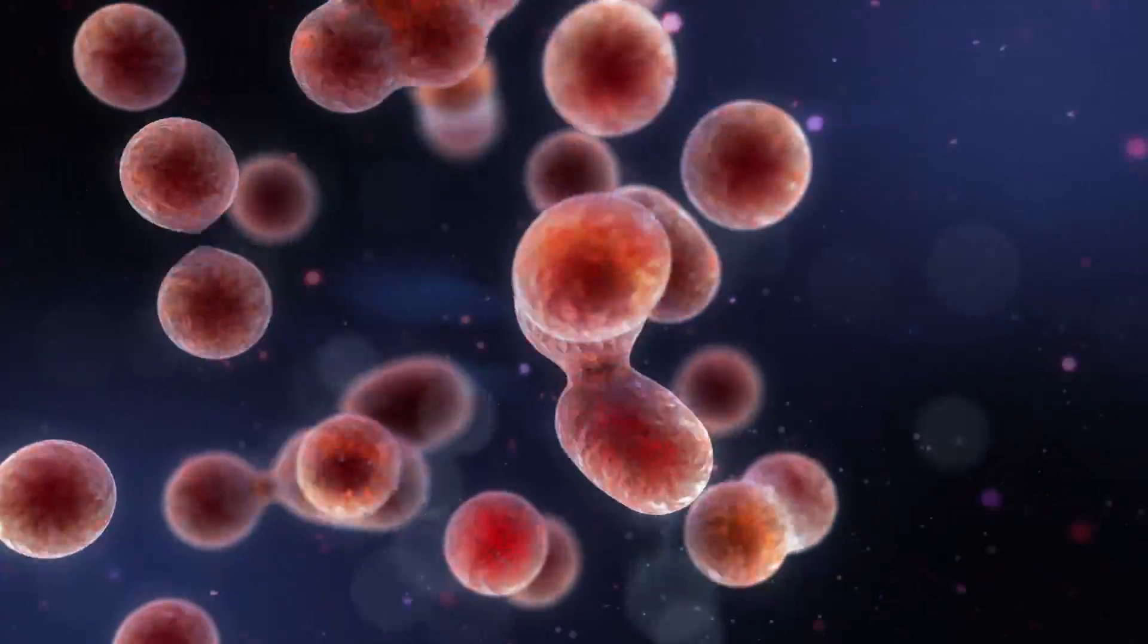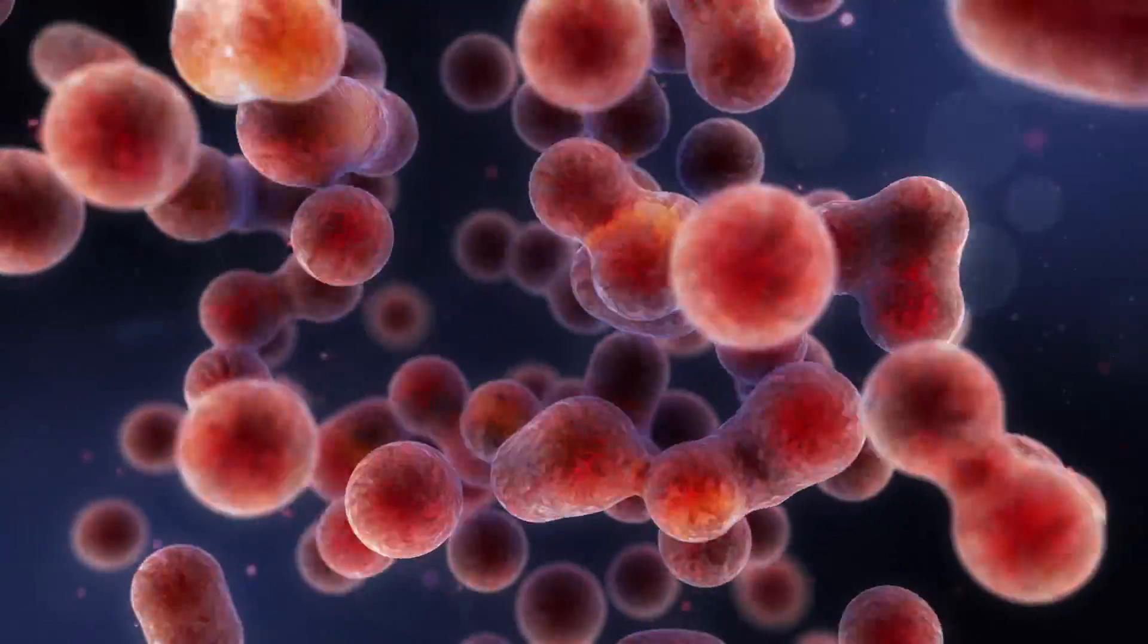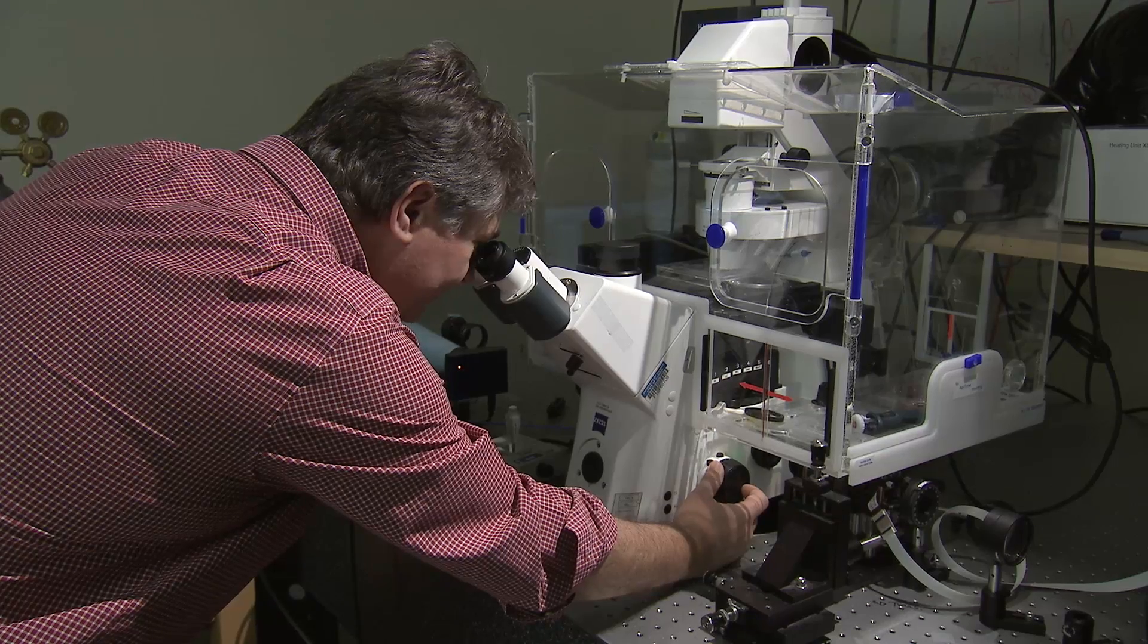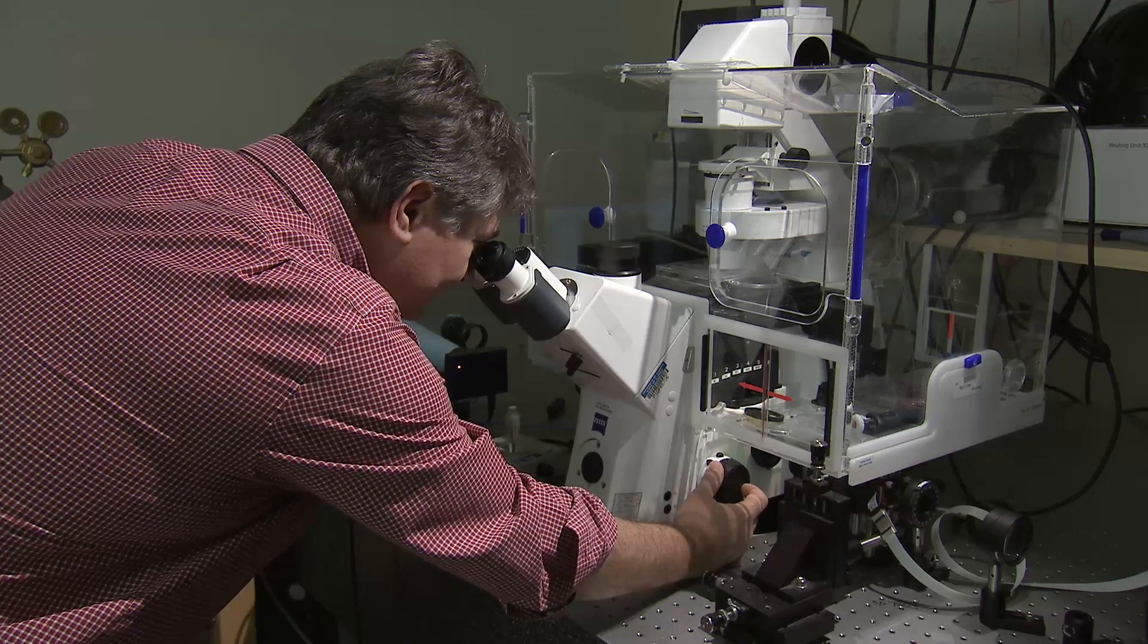It's estimated that the human body has over 30 trillion cells. Cells are so small, most can only be seen through a microscope.